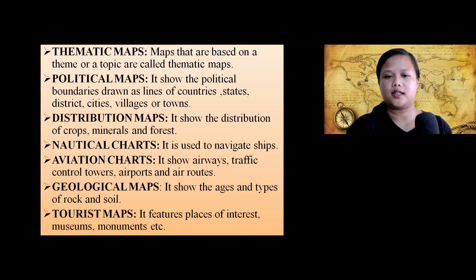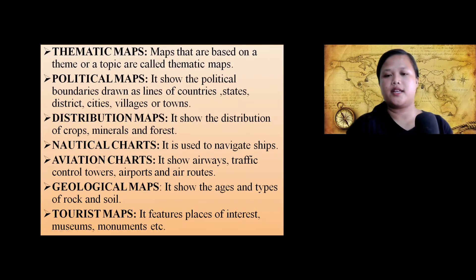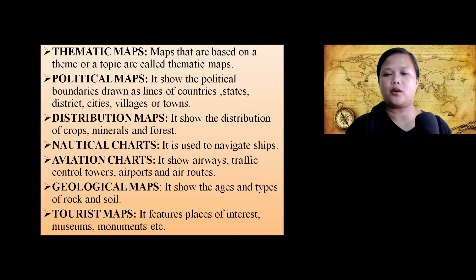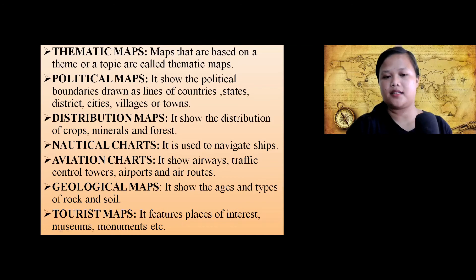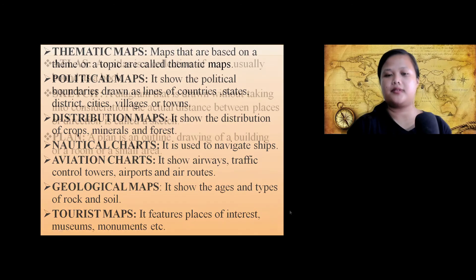Next is nautical charts — used to navigate ships. Aviation charts show airways, traffic control towers, airports, and air routes. Geological maps show the age and types of rock and soil. Tourist maps feature places of interest, museums, monuments, etc.